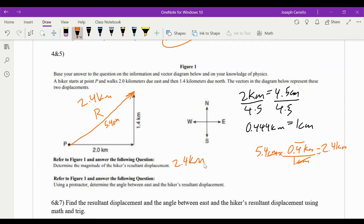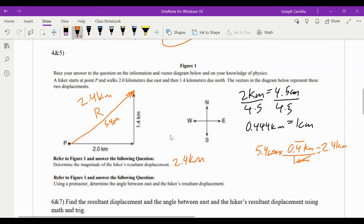Now, using a protractor to determine the angle between east and the hiker's resultant. So we're looking for this angle right here. So you have to physically measure that with your protractor. Again, look at classes 6 and 7 on how to do that. So this angle here measures about 35 degrees. So there are our answers.